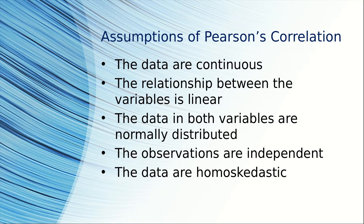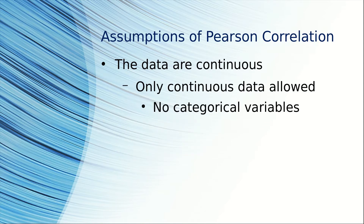The data are continuous. The relationship between the variables is linear. The data in both variables are normally distributed. The observations are independent, and the data are homoscedastic. Let's look at these one at a time.